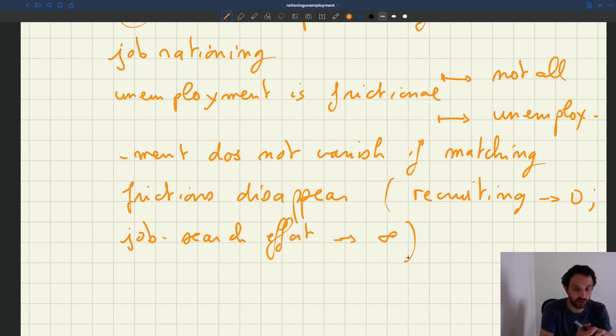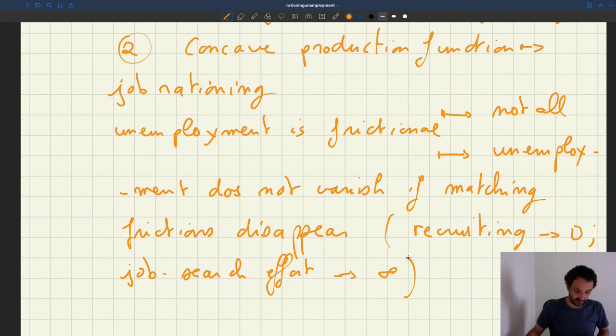If workers desperately want a job, but if firms don't want to hire them, these people are not going to have a job. In this model, we'll be able to separate unemployment in two categories.